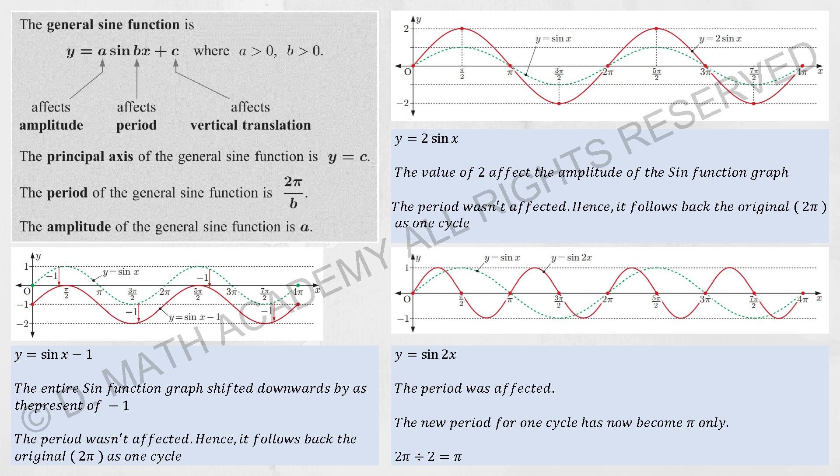For the next one, which is the period, period actually is used to calculate the cycle of it. Let's say we have sine 2x here. After substituting 2 pi over 2, you will get to know that the cycle or the period now becomes pi already. Within 180, you're required to complete the entire cycle.